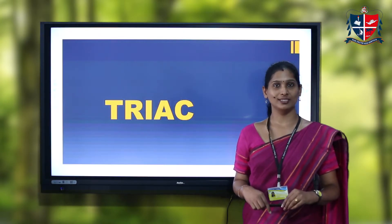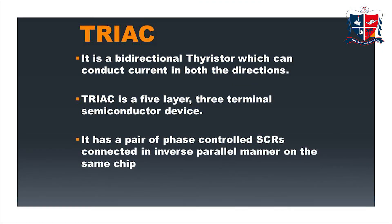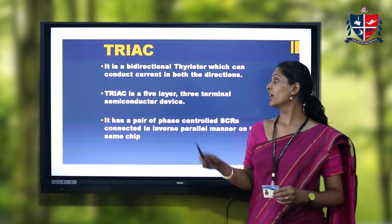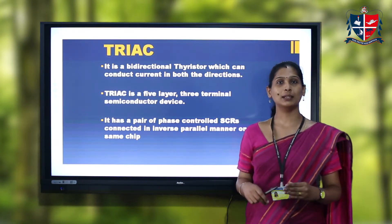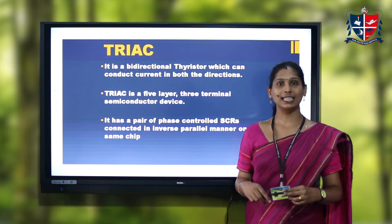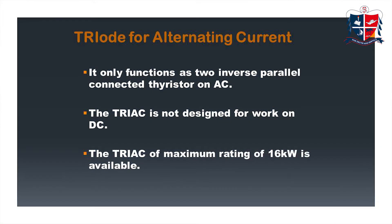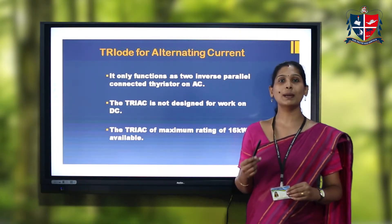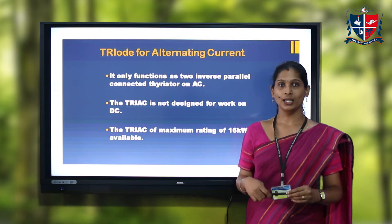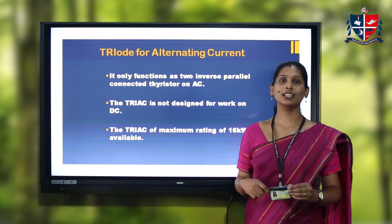Welcome to today's session. Today we are going to discuss about a thyristor called TRIAC. TRIAC is a bidirectional thyristor — that is, it can conduct in both directions. TRIAC is basically a five-layer, three-terminal semiconductor device using two SCRs connected in an inverse parallel manner on the same chip. TRIAC is termed triode for alternating current; it only functions as two inverse parallel SCRs for AC and is not designed to work for DC.